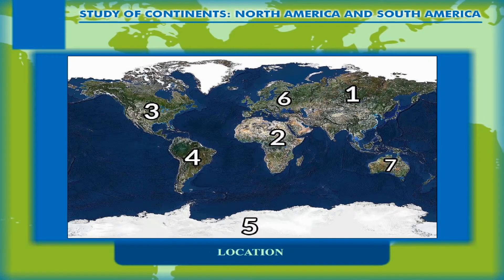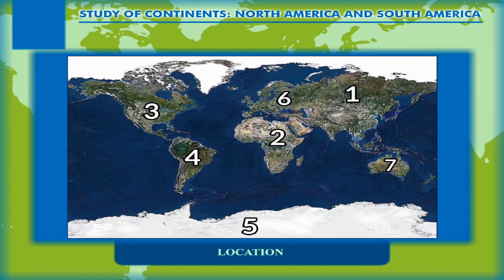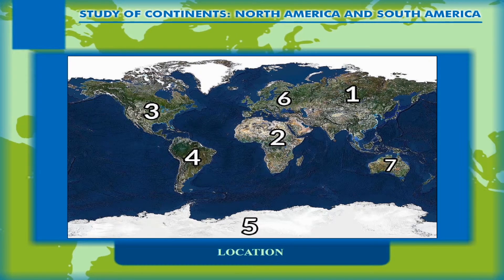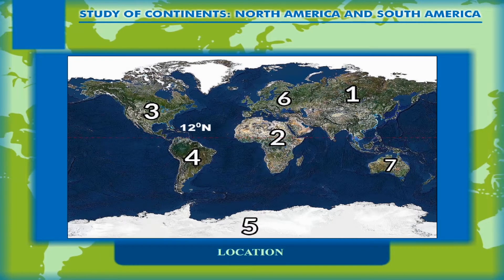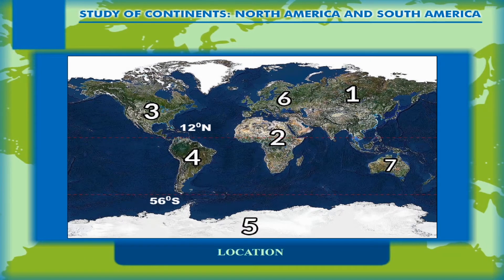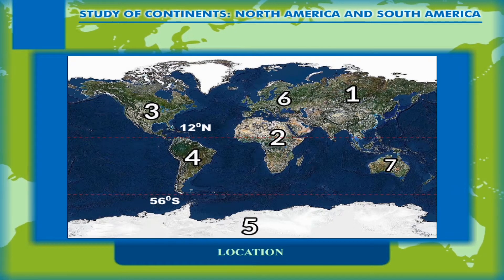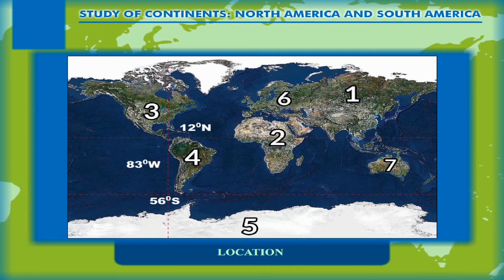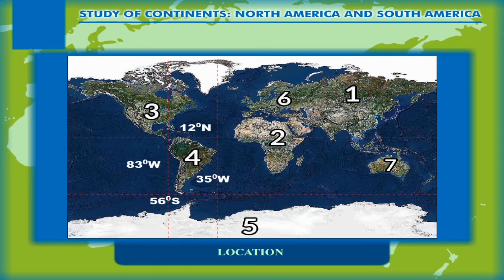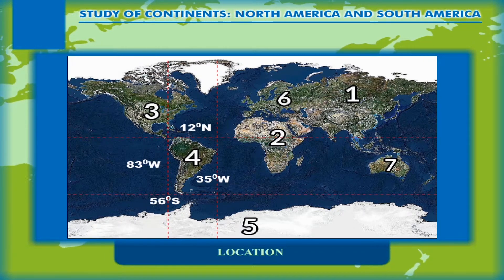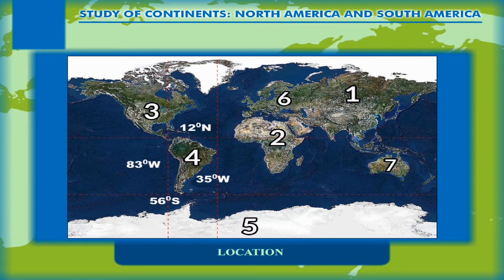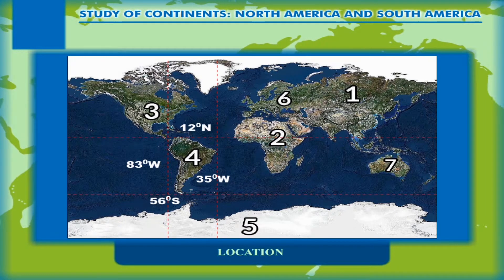South America ranks fourth among continents in terms of its aerial extent. It extends from 12 degrees north to 56 degrees south latitudinally, and its longitudinal extent is from 83 degrees west to 35 degrees west. The important parallels of latitude that pass through the continent are the equator and the Tropic of Capricorn.